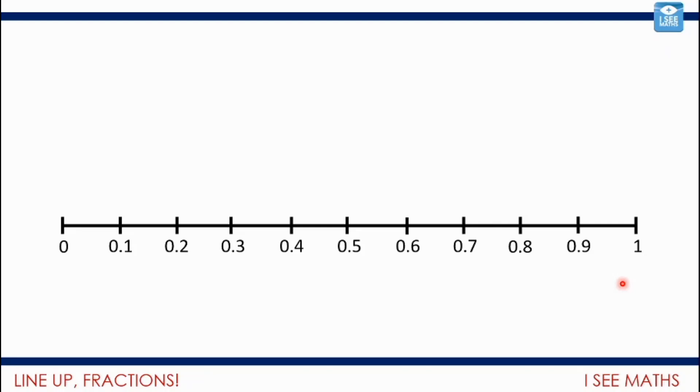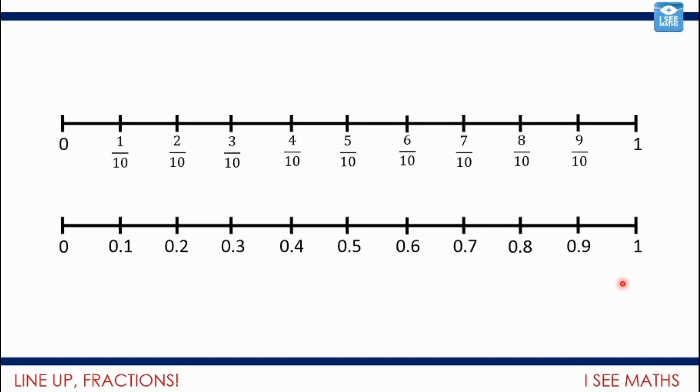Now, that's very similar to counting in tenths, of course, because we're doing the same thing with fractions. We're splitting this number line into ten equal pieces. And we're counting up, so we can see, for example, four tenths is the same as 0.4. Two tenths is the same as 0.2. It's a very similar system. It's a base ten system.